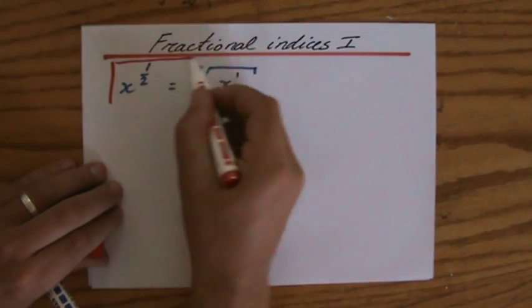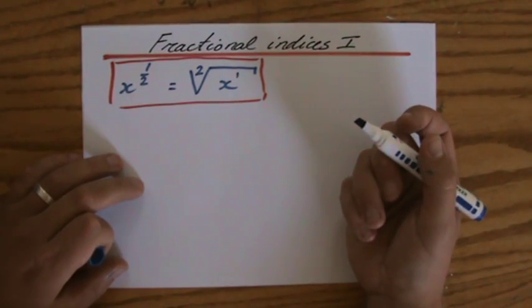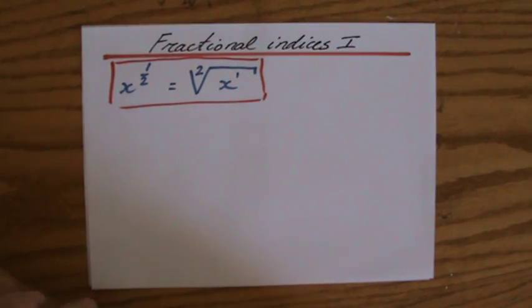But that is important to realize, and I'll show you in a minute why. x to the power of a half is the same as the square root of x. Now, is that something to really feel worried about? Absolutely not.